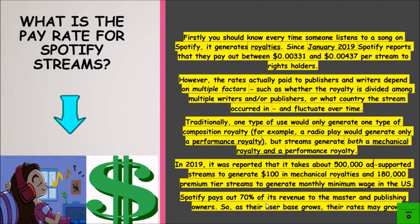Traditionally, one type of use would generate one type of composition royalty. For example, a radio play would generate only a performance royalty, but streams generate both a mechanical royalty and a performance royalty. In 2019, it was reported that it takes about 500,000 ad-supported streams to generate $100 in mechanical royalties, and 180,000 premium streams to generate monthly premium wages in the United States. Spotify pays out 70% of its revenue to the master and publisher owners. As their user base grows, their rates may grow. Typically, there's no way of saying a person will get a fixed amount for a thousand streams because it all depends on where those streams are coming from.